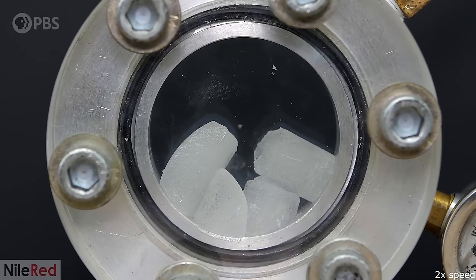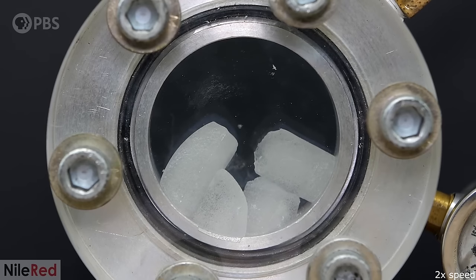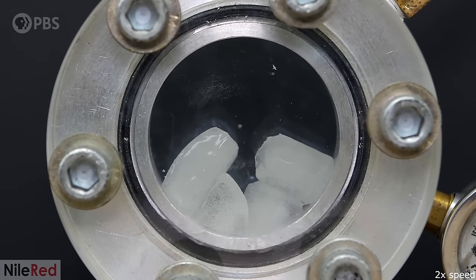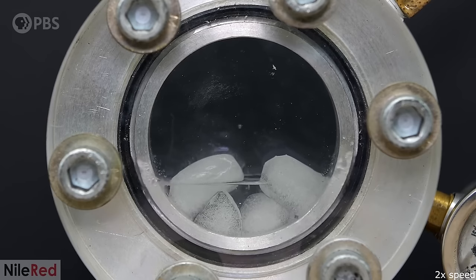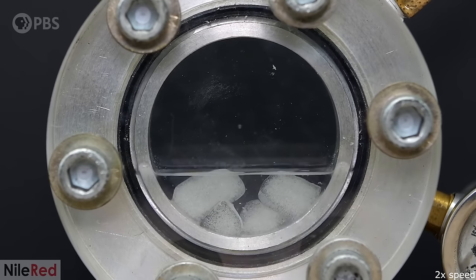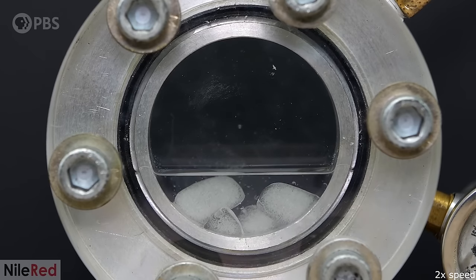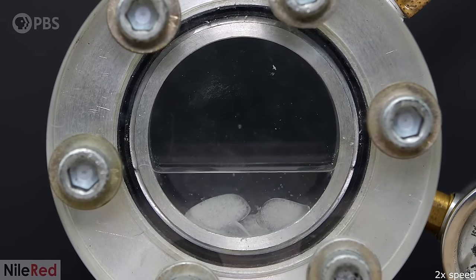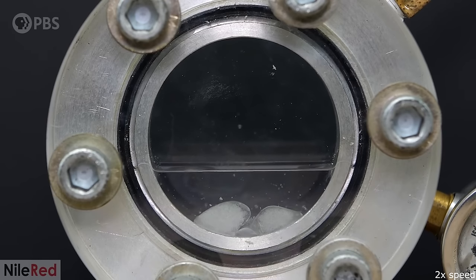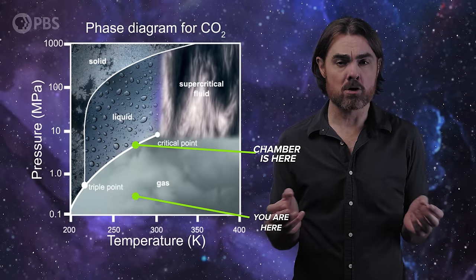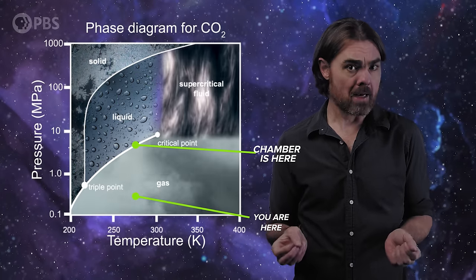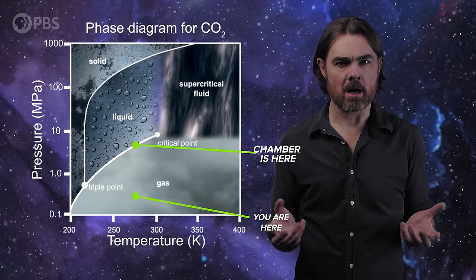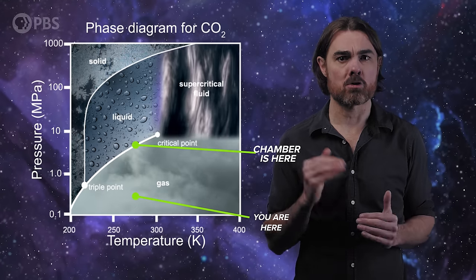This is a pressure chamber containing dry ice, carbon dioxide in solid form. That ice was presumably created below the 194.7K freezing point of CO2 at atmospheric pressure. Now at room temperature it begins to sublimate directly into a gas. At atmospheric pressure liquid CO2 can't exist. But in the small volume of this chamber, sublimation causes pressure to rise.